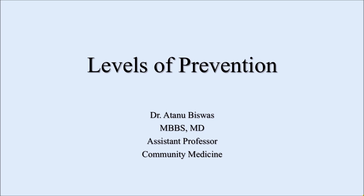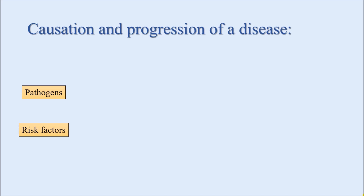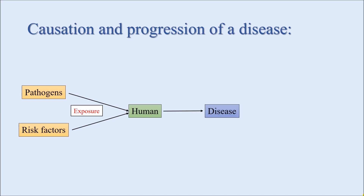In today's video we are going to talk about the different levels of prevention. From our previous video, where we discussed the natural history of disease, we already know how disease occurs and how it progresses naturally. We can have pathogens or risk factors — pathogens include bacteria, viruses, parasites, fungi, etc., and these pathogens are responsible for different communicable diseases. Alternatively, we can also have different risk factors which are responsible for non-communicable diseases. Sometimes human populations are exposed to these pathogens or risk factors, which can lead to the development of disease, and the disease can progress further, develop complications, and can also result in death.